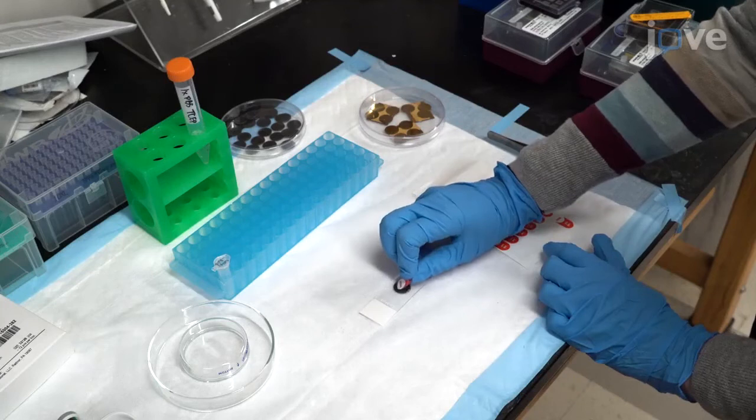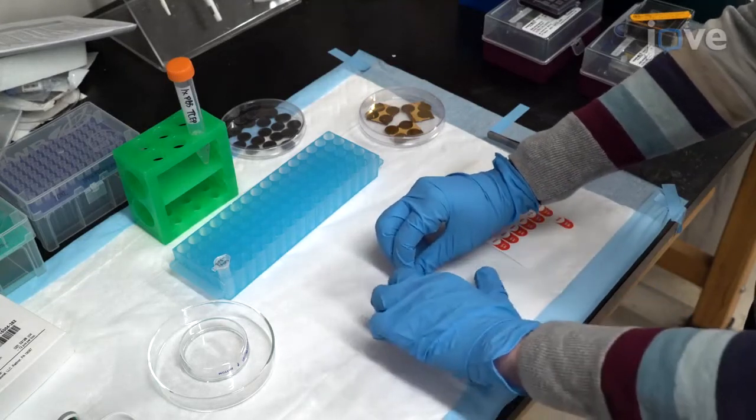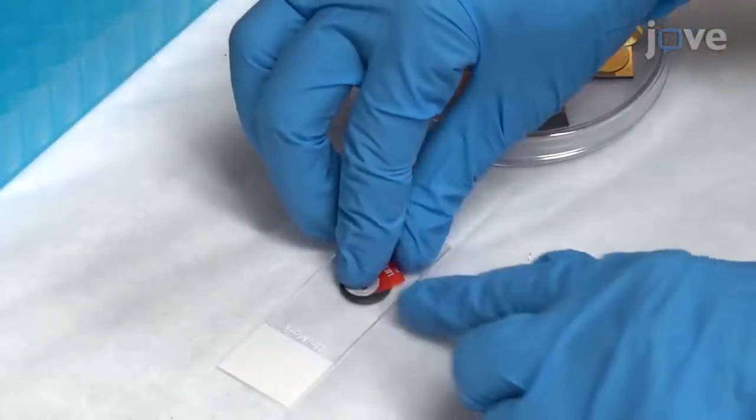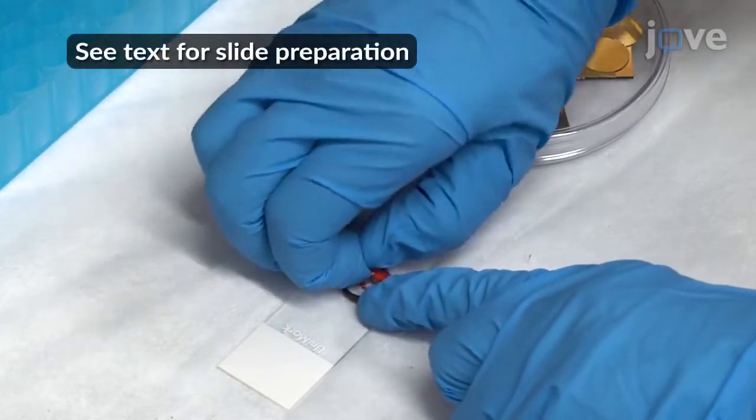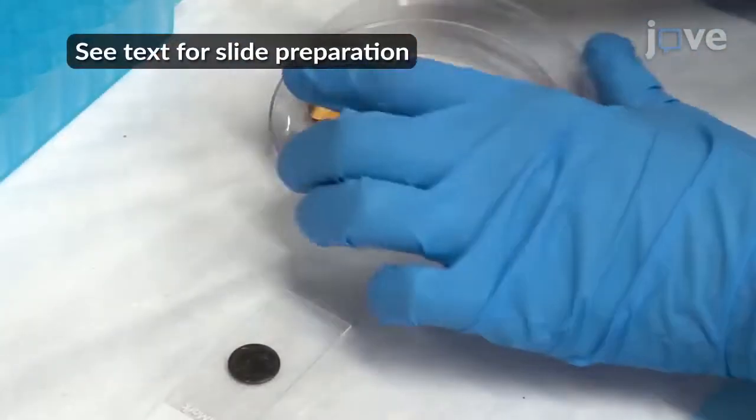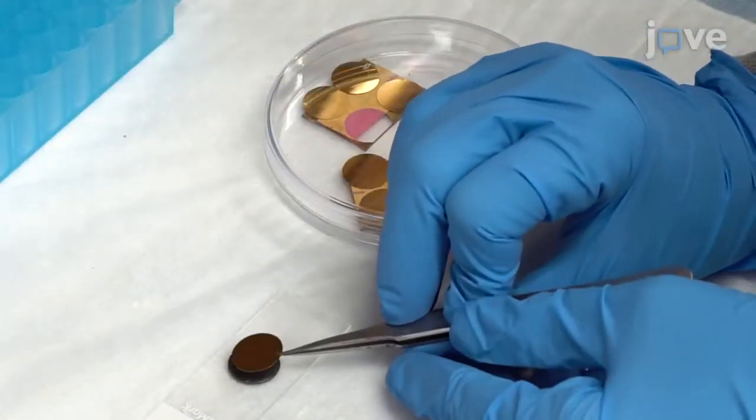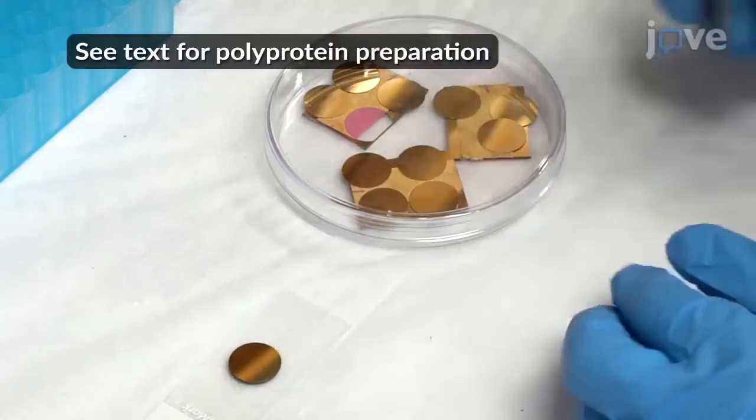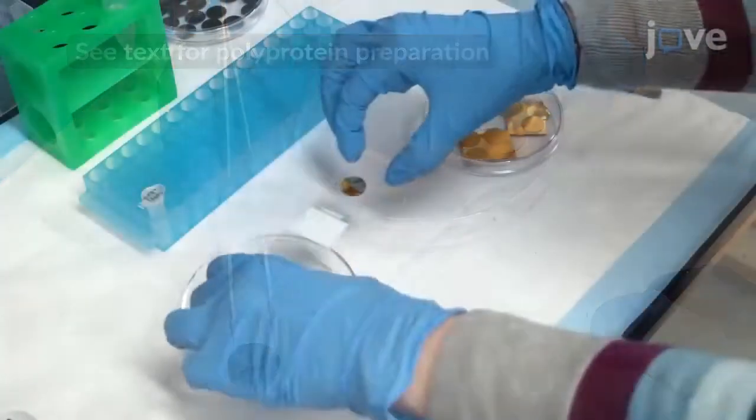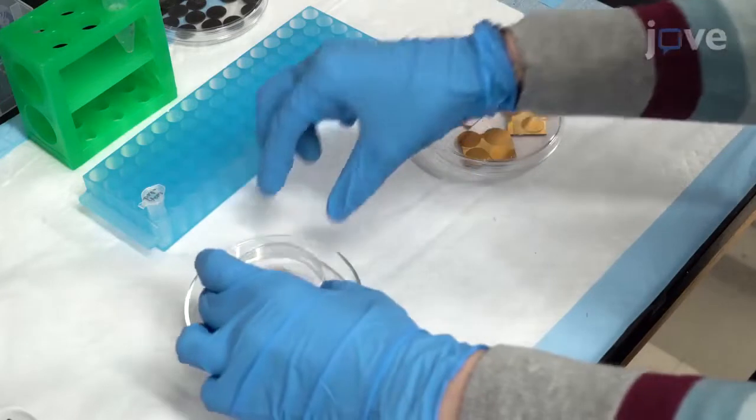To begin the procedure, attach a non-conductive adhesive tab to a clean 15 mm wide iron disc. Remove the cover sheet and firmly press a clean uncoated or gold-coated glass slide onto the exposed adhesive. Store the slide in a clean covered petri dish.